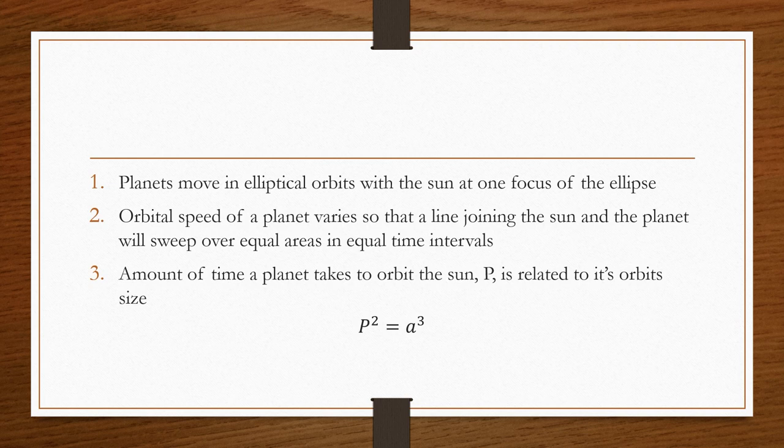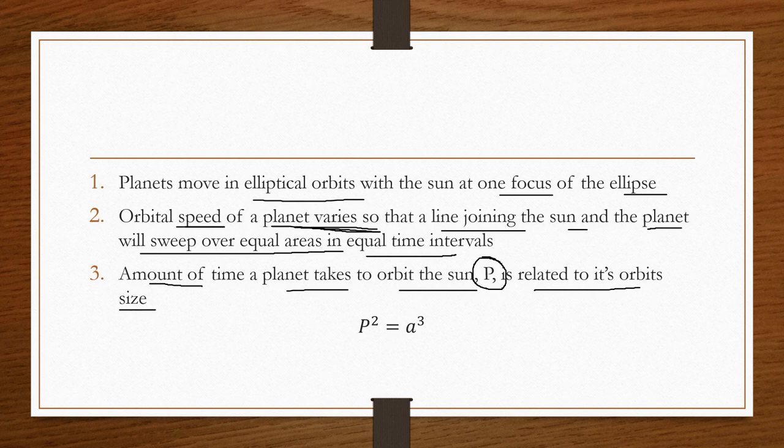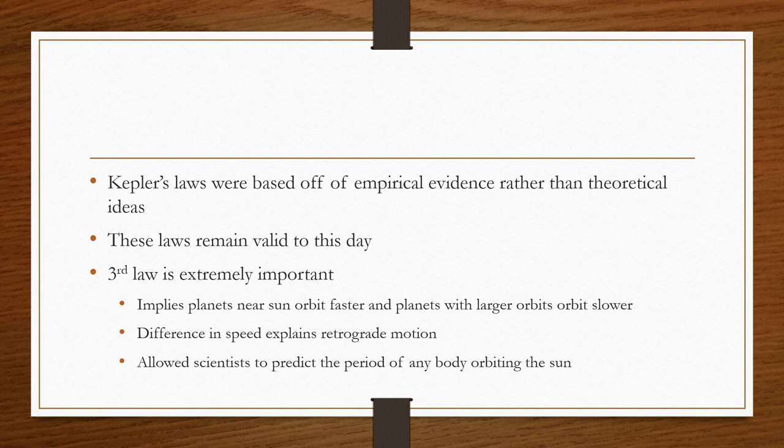His discoveries, he wrote down into three laws. Planets move in elliptical orbits, with the sun at one focus of the ellipse. Two, the orbital speed of a planet varies, so that a line joining the sun and the planet will sweep over equal areas in equal time intervals. Three, the amount of time a planet takes to orbit the sun, known as P, is related to its orbit's side, which is A. So, we get P squared equals A cubed. Do not forget that. You'll need to know all three of these.